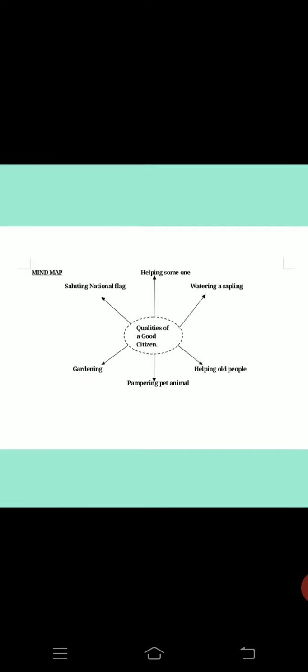Now let's move on to the mind map. Qualities of a good citizen: helping someone, watering a sapling, helping old people, caring for a pet animal, gardening, and saluting the national flag. These are the qualities of a good citizen.